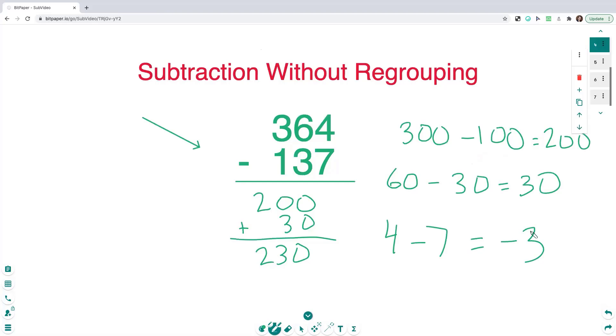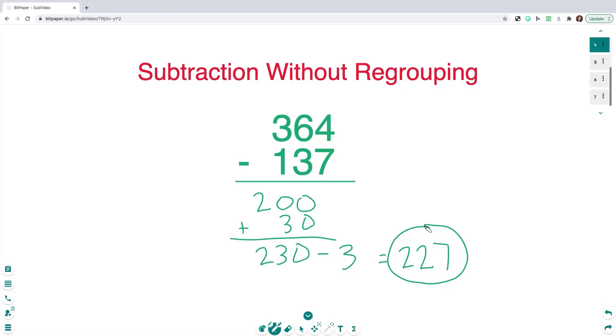So because this is a negative, that's the same as subtracting 3. So I'm going to subtract 3 from my 230. And 230 minus 3 is going to leave me at 227 as my final answer.